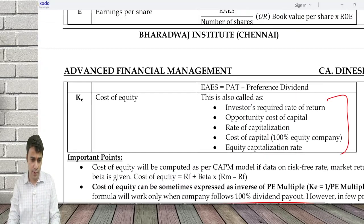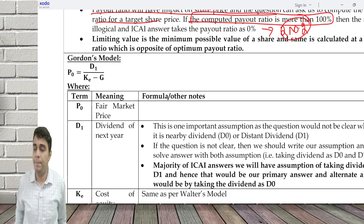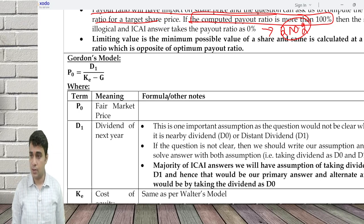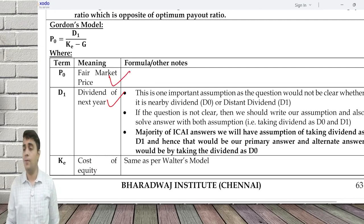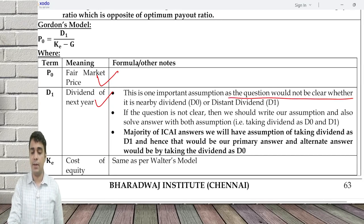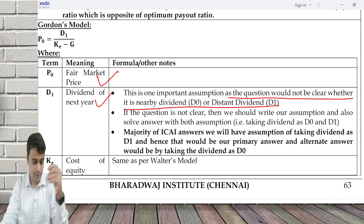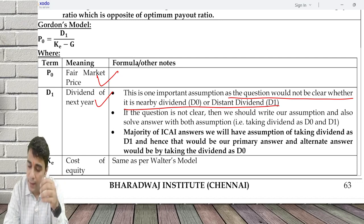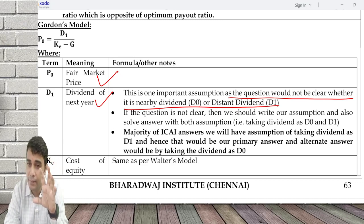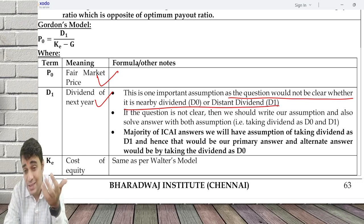Under Gordon's formula: P0 equals D1 by (Ke minus g). P0 is equal to fair market price. D1 is the dividend of next year — one important assumption. As the question may not be clear whether it's a nearby dividend or distant dividend: nearby dividend is something going to be paid in the next one or two months, something you can visualize and are going to get paid. Distant dividend is something going to be paid in five or six months.